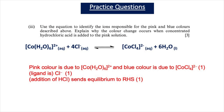For part two, the bonding present in CoCl₄²⁻ is coordinate bonding or dative bonding — one mark for that. For part three, the pink colour is due to Co(H₂O)₆²⁺ and the blue colour is due to CoCl₄²⁻. When concentrated hydrochloric acid is added, Cl⁻ ions are introduced as ligands, and the addition of Cl⁻ ions causes the equilibrium to shift to the right-hand side, producing the blue colour.